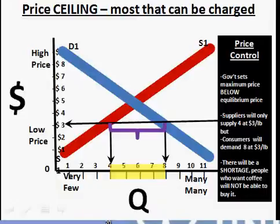A lot of things happen when the market is interfered with like this. One situation that can occur is what's referred to as a black market — an illegal market — where landlords charge more rent than they're supposed to because they can find people willing to pay that higher rent. There would be consumers willing to pay a little extra under the table to secure one of those rent-controlled apartments, creating a black market operation that is totally illegal.